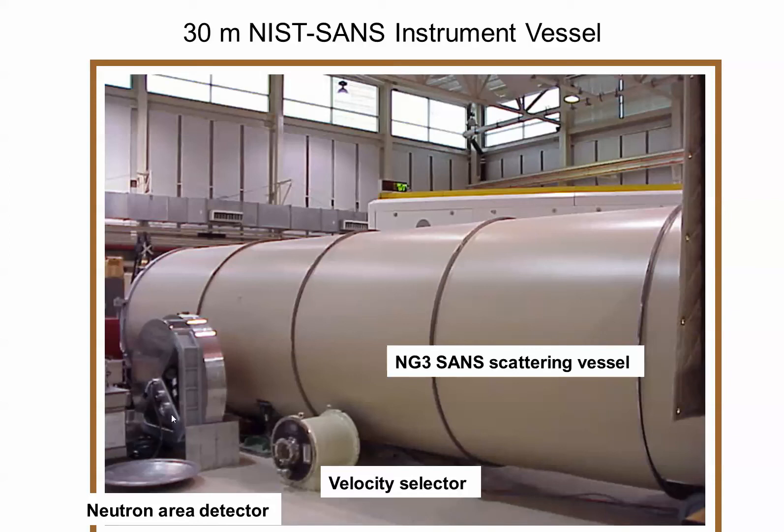They're showing you an area detector, just to get a feel for the scale. This is the big NG-3 vessel. This is a velocity selector. This is an area detector.